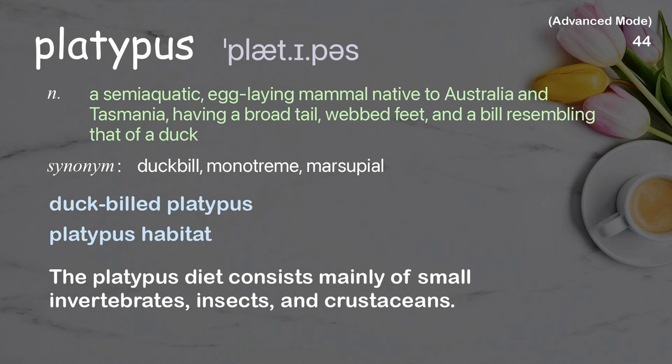Examples: duck-billed platypus, platypus habitat. The platypus diet consists mainly of small invertebrates, insects, and crustaceans.